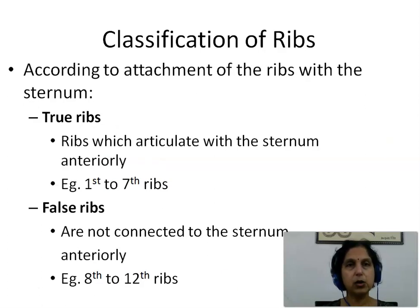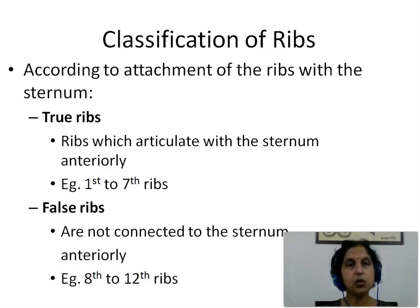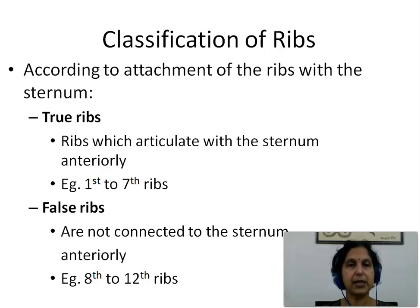According to the attachment of the ribs with the sternum, we can classify them as true ribs and false ribs. True ribs are ribs which articulate with the sternum anteriorly, examples being the 1st to 7th ribs. False ribs are not connected to the sternum anteriorly, examples being the 8th to 12th ribs.